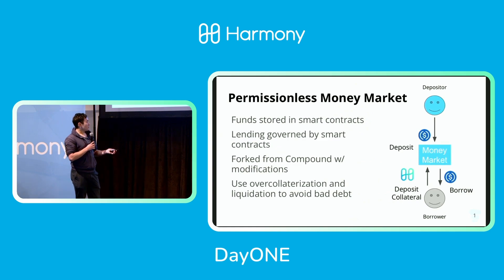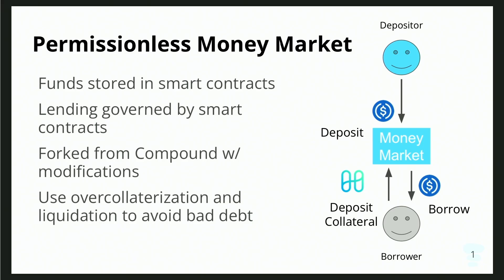First, we have to understand what a money market is. To put it simply, it's like a bank on the blockchain. Say you bridge over your USDC or your wrapped Bitcoin — what can you do with it? You can put it in a liquidity pool in a DEX, but that is kind of risky because of impermanent loss. So rather than just keeping it in your wallet doing nothing, you can deposit it in the bank and earn interest. The interest comes from borrowers who want to borrow these assets for whatever reason.